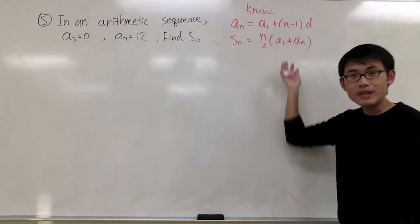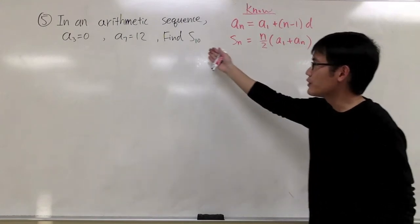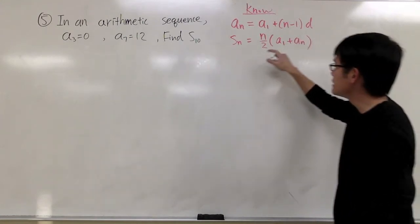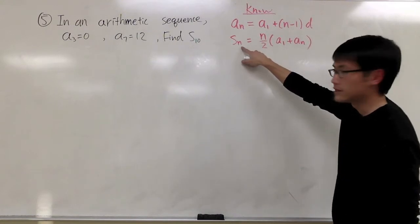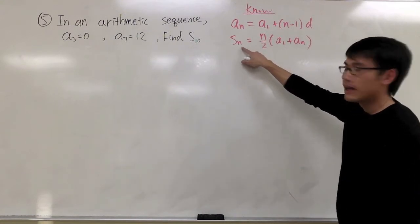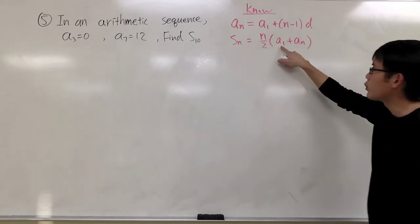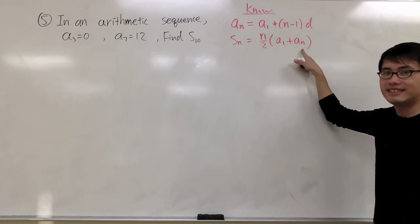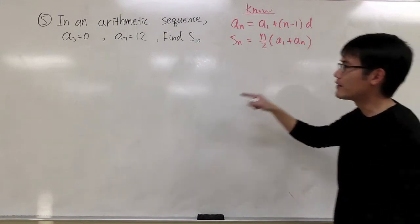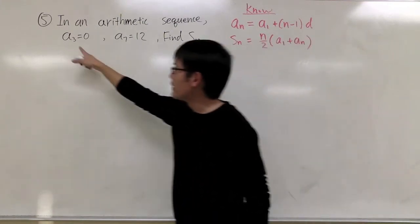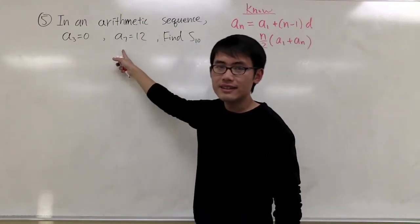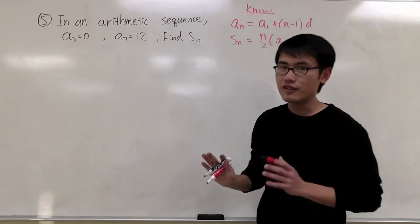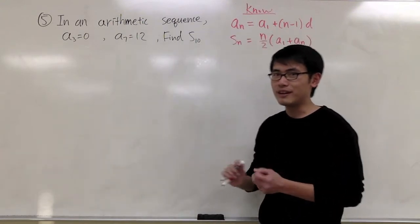Now we have these two formulas, and in order for us to find S10, it seems like n is equal to 10 in this formula, and we need to find out what a1 is and what a10 is. However, we only have a3 and a7, so we don't have enough information yet to find S10.